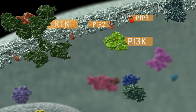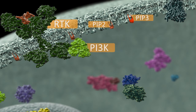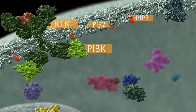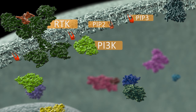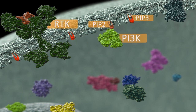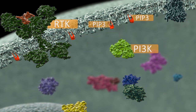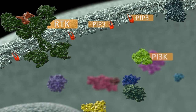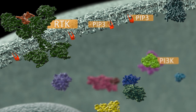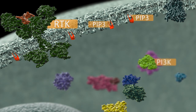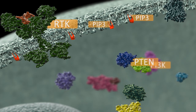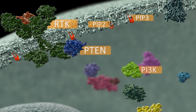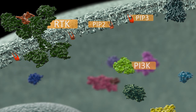There are three classes of PI3 kinases. Class I PI3 kinases catalyze conversion of phosphatidyl inositol-4,5-bisphosphate, or PIP2, to phosphatidyl inositol-3,4,5-bisphosphate, or PIP3. The production of PIP3 by PI3 kinase is antagonized by the activity of tumor suppressor tensin homolog deleted on chromosome 10, or PTEN.